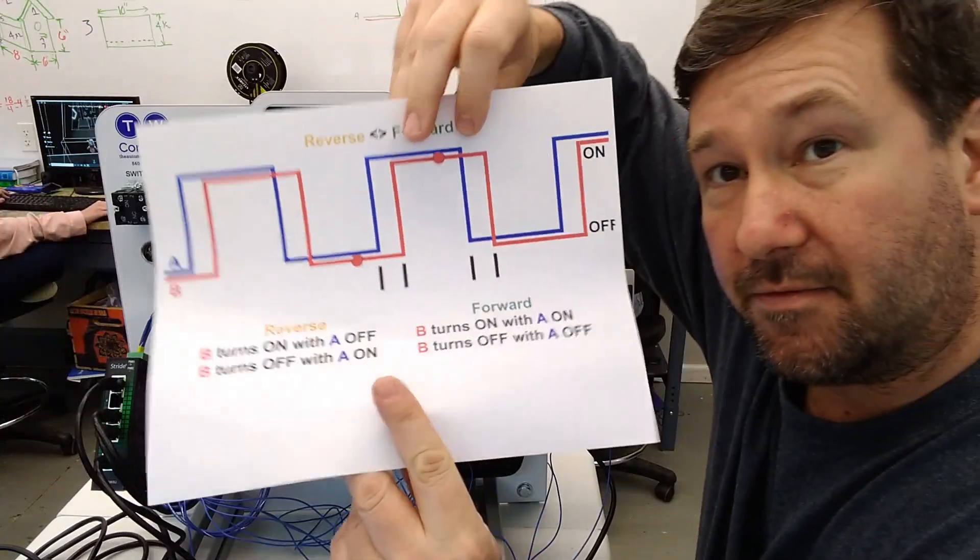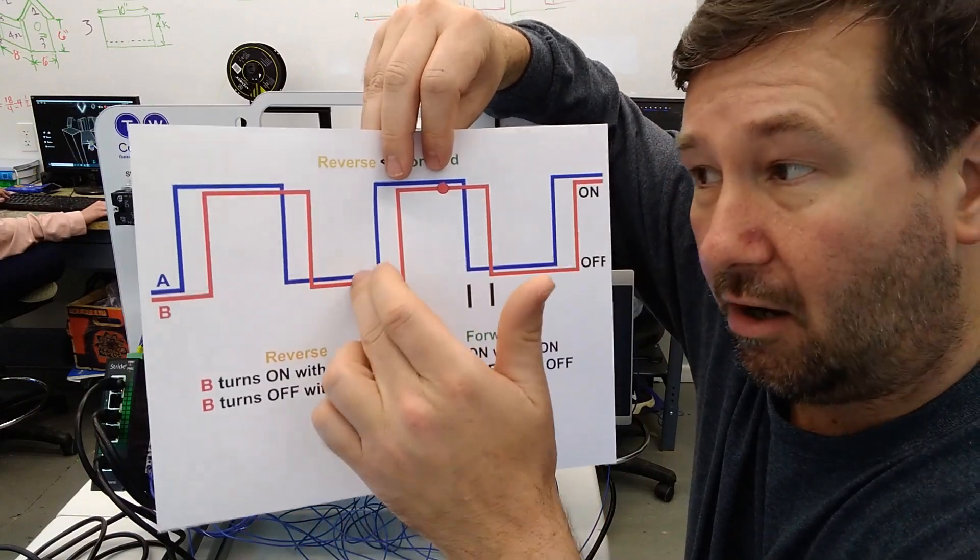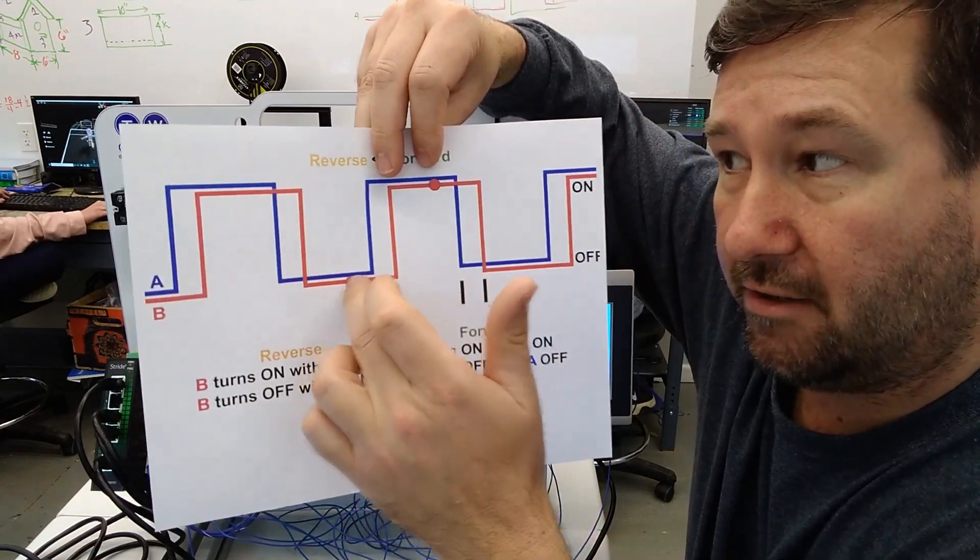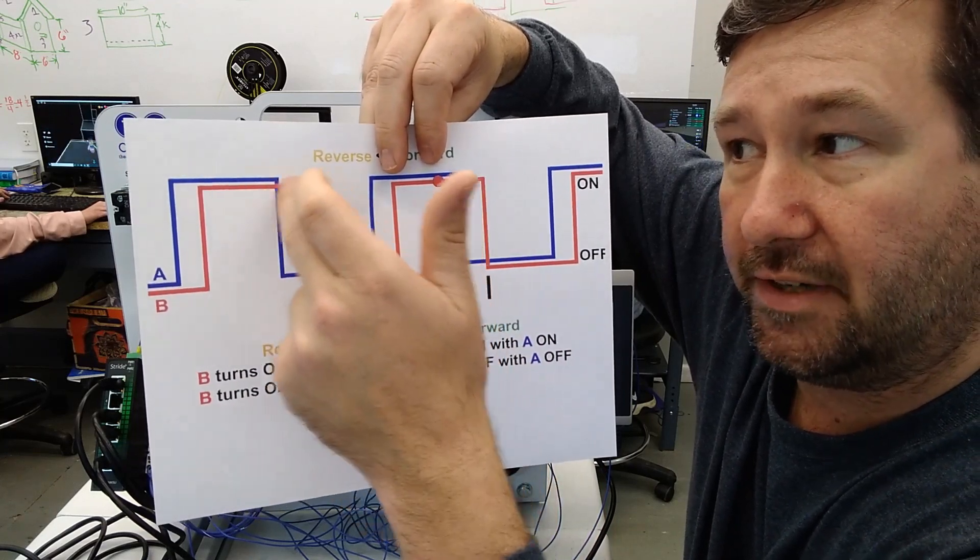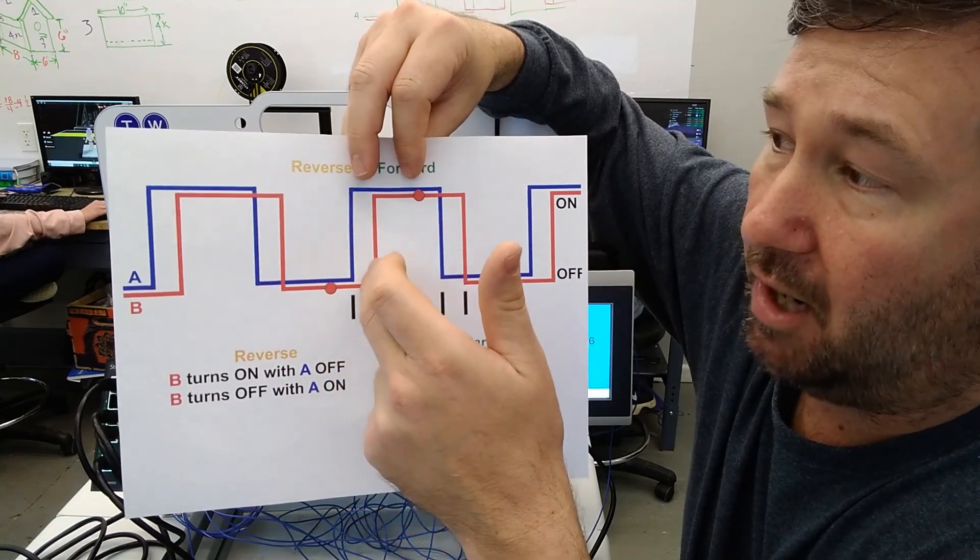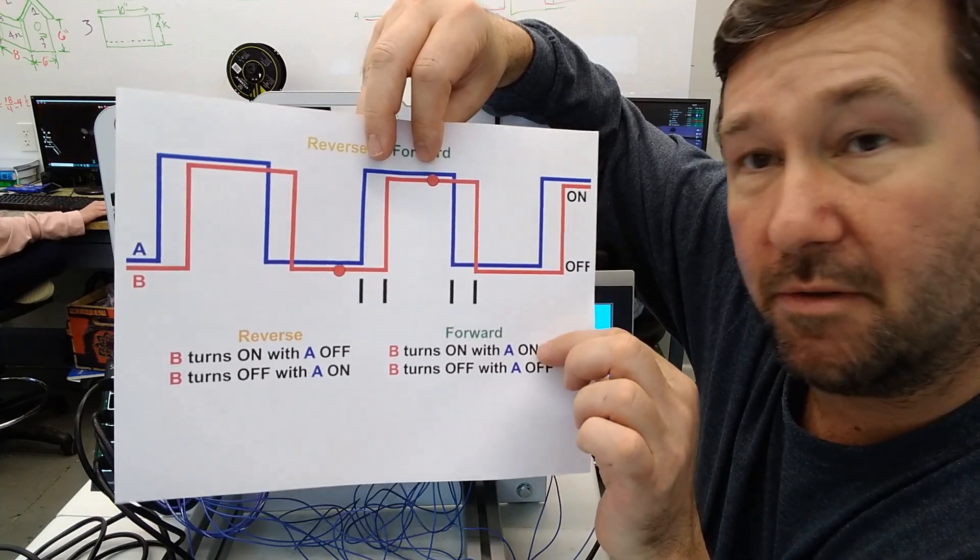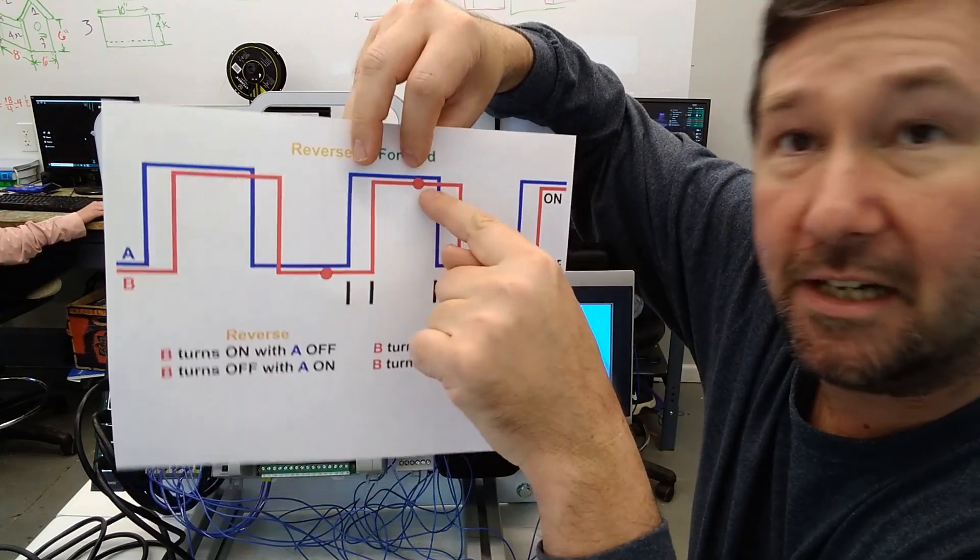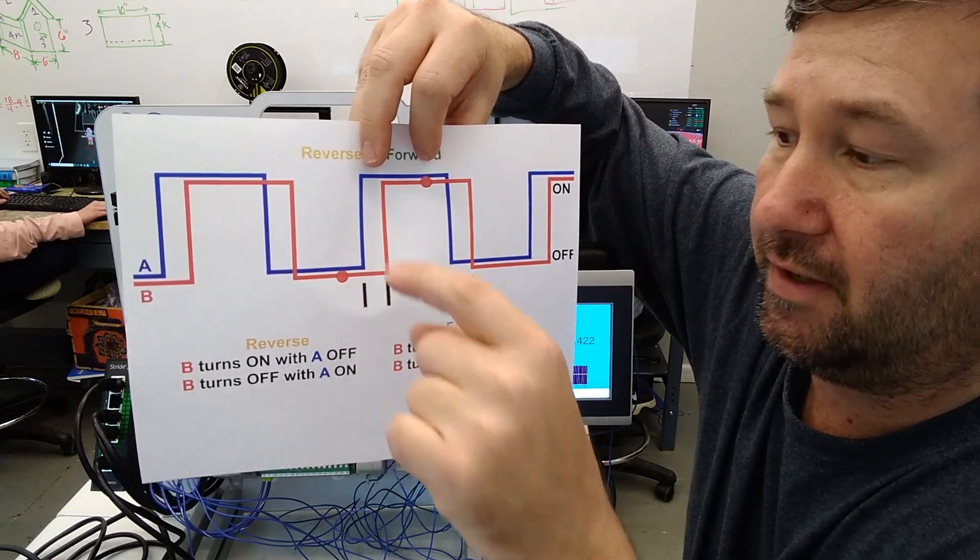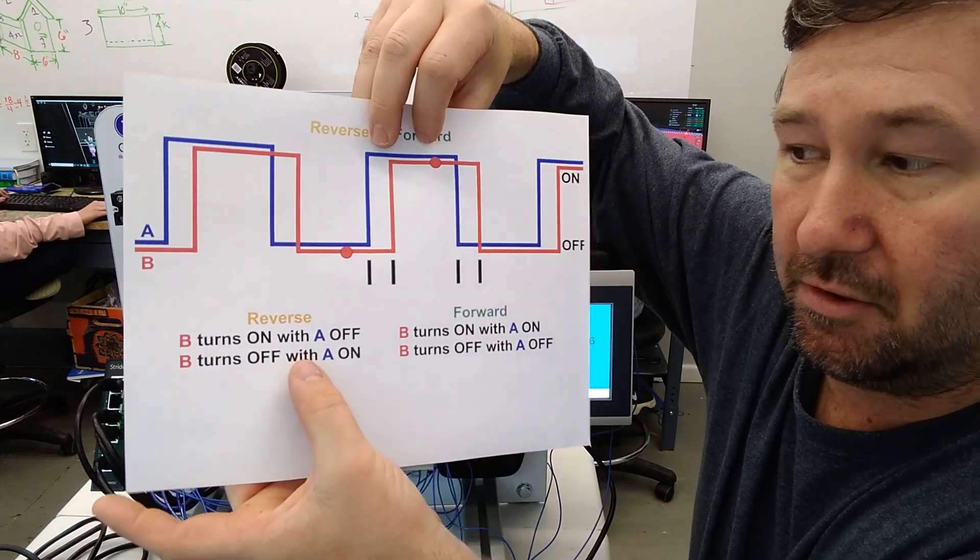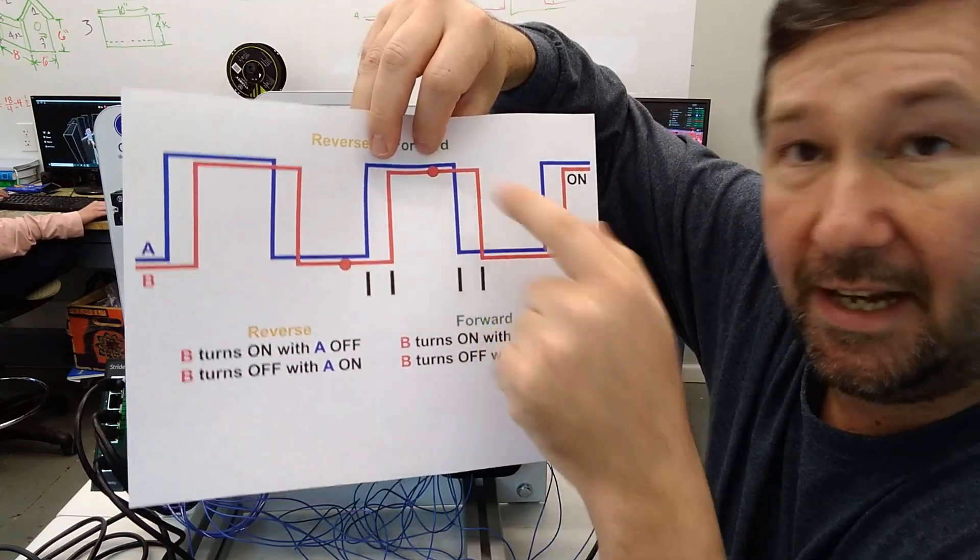Now the other two counts come from the transition from the B. So B can be off and it can go on this way or it can go on this way. So if B goes from off to on and A is off, it's going to be moving reverse. If B goes from off to on and A is on, then it's going to be moving forward. And same thing on our off to on transition. So B goes from on to off and A is on, we're going to be moving reverse. And B goes from on to off and A is off, we're going to be moving forward.